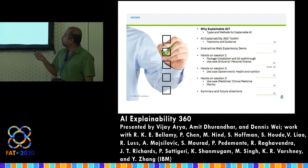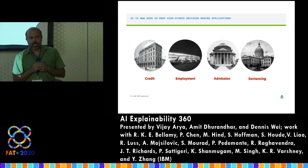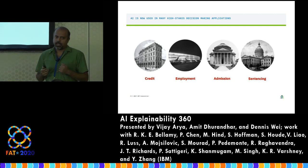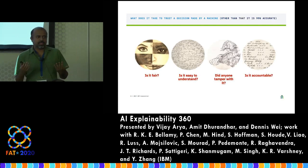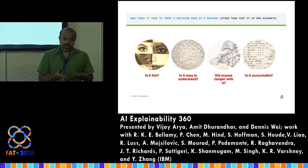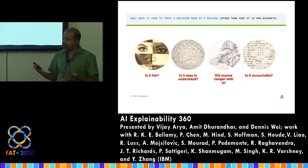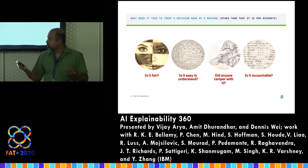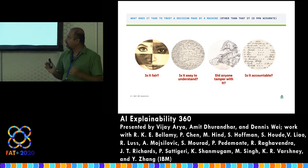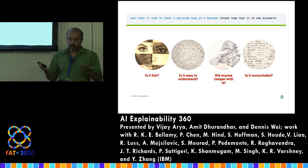AI is being used for many high-stakes decisions such as credit, employment, admissions, and sentencing. Just having a highly accurate system on a held-out set is no longer sufficient for successful deployment. The questions that arise are: is it fair, is it easy to understand, is it robust, and is it accountable? These four pillars help you trust the system. The focus of this tutorial will be on the second pillar — understandability.